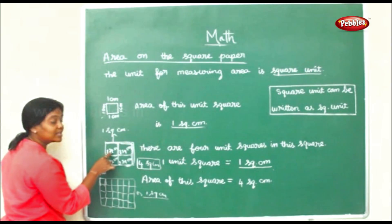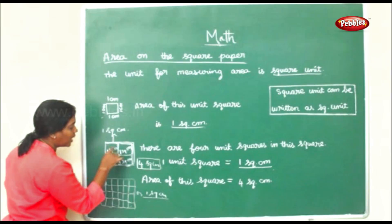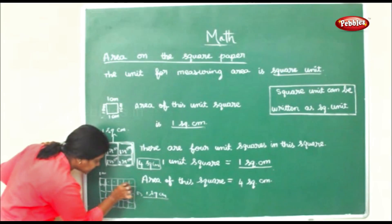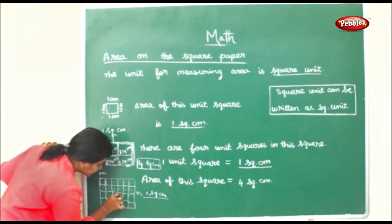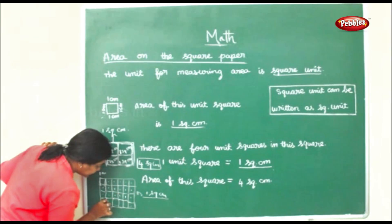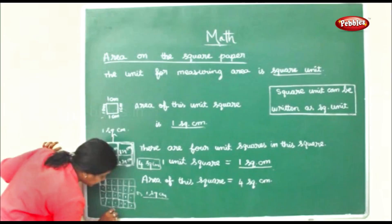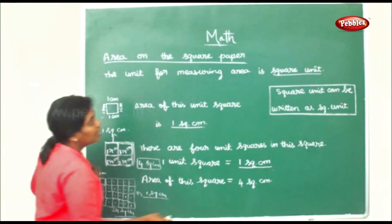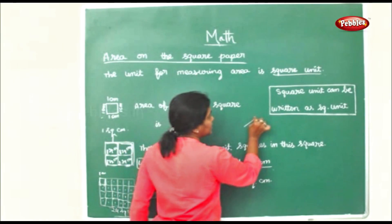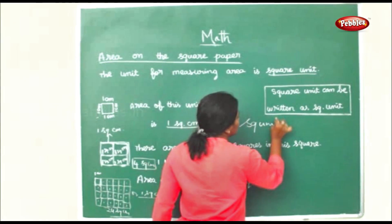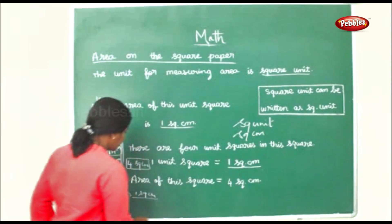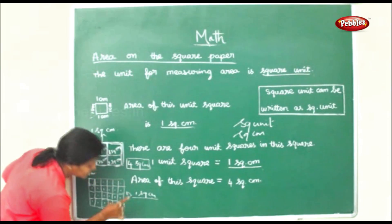Each one is one square centimeter. Totally you have four squares here — one, two, three, four. Now count here: one, two, three, four, five, six, seven, eight, nine, ten, eleven, twelve, thirteen, fourteen, fifteen, sixteen, seventeen, eighteen, nineteen, twenty, twenty-one, twenty-two, twenty-three, twenty-four square centimeters. Square unit can be written as square unit, so that's why I have written 24 square centimeters.